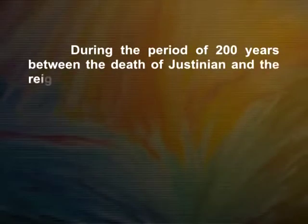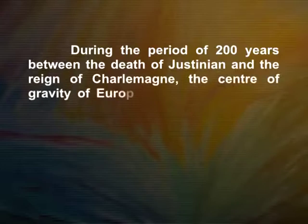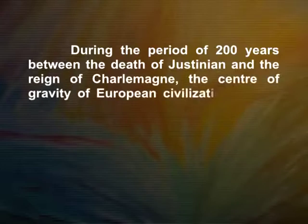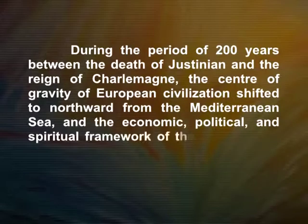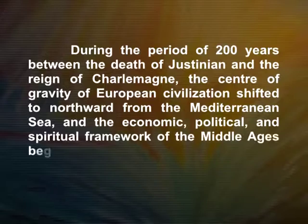During the period of 200 years between the death of Justinian and the reign of Charlemagne, the centre of gravity of European civilization shifted northward from the Mediterranean Sea, and the economic, political and spiritual framework of the Middle Ages began to take shape. Now let us see some of the important artistic achievements of these centuries.